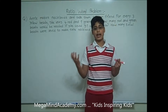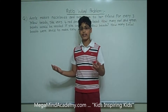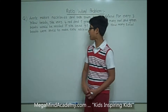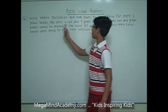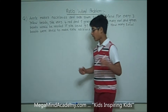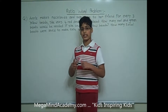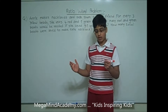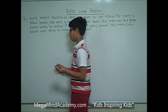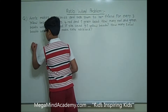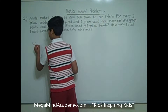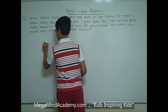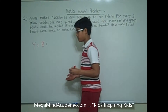At first glance, we can tell that there are 3 types of colored beads. They are yellow beads, red beads, and green beads. We can also see in this problem that this is a ratio problem. So the ratio of the yellow beads — Y for yellow beads — to the red beads — R for red beads — to the green beads — G for green beads —